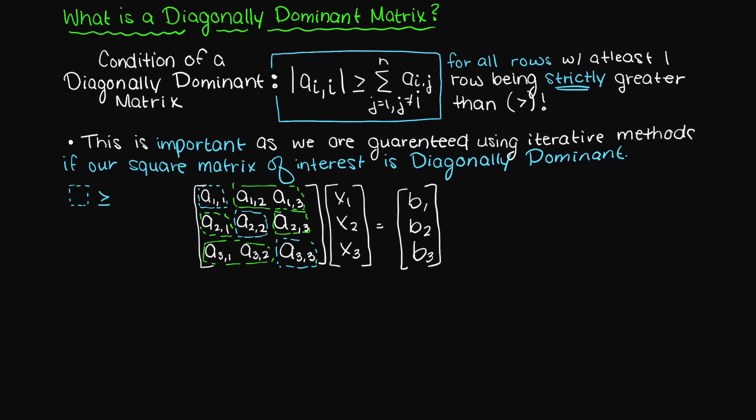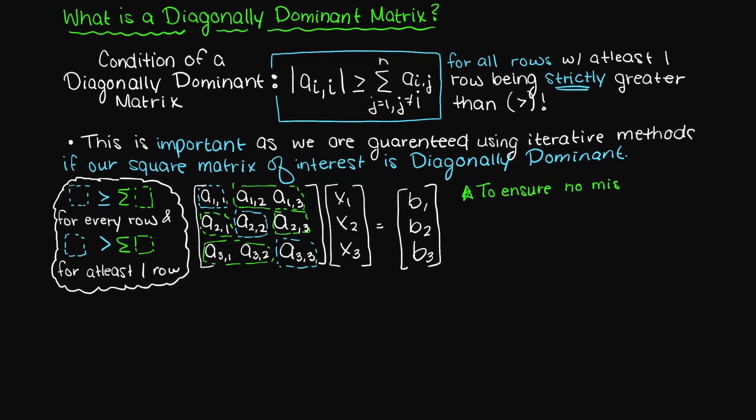Just remember only focus on one row at a time when doing this, meaning that the sum of all the green elements in this row will be less than or equal to the blue element, with at least one of the rows' blue element being greater than the sum of all the green elements in that row.